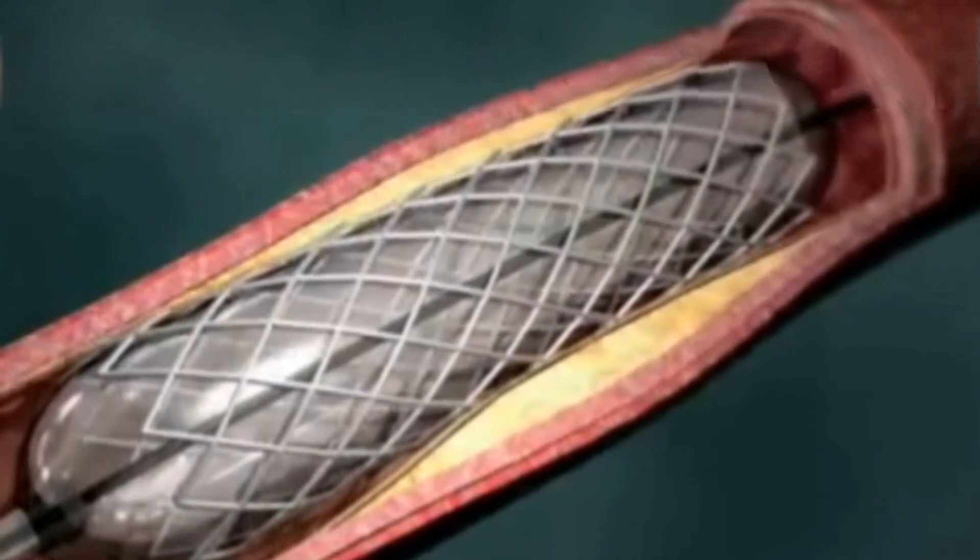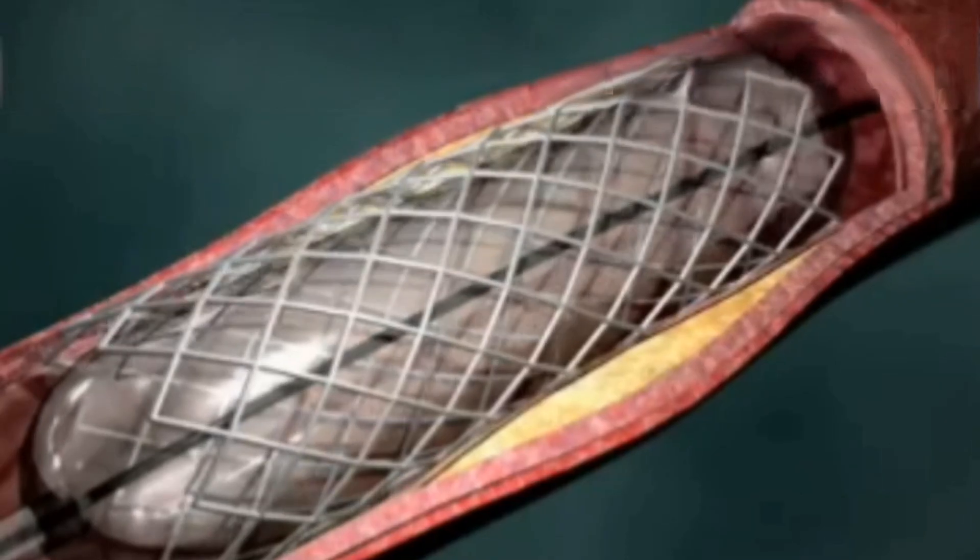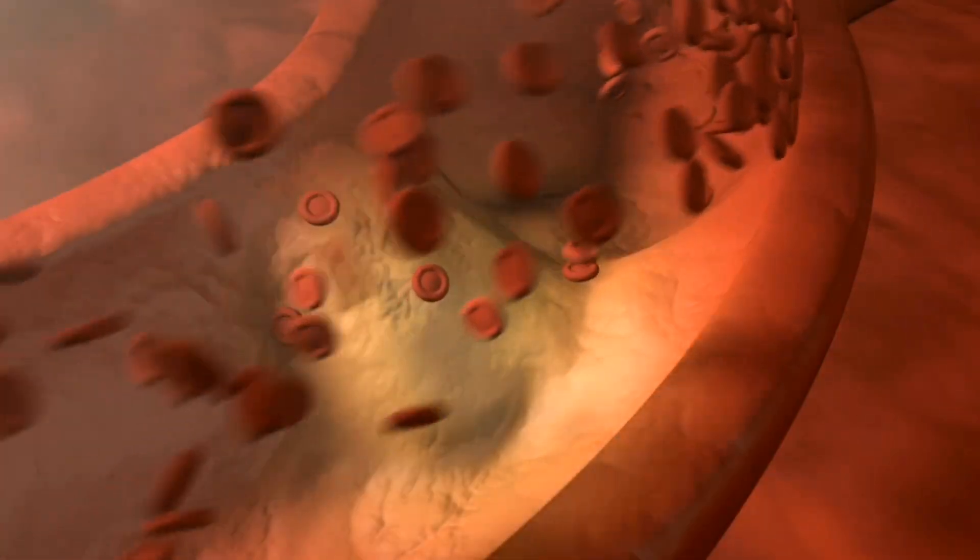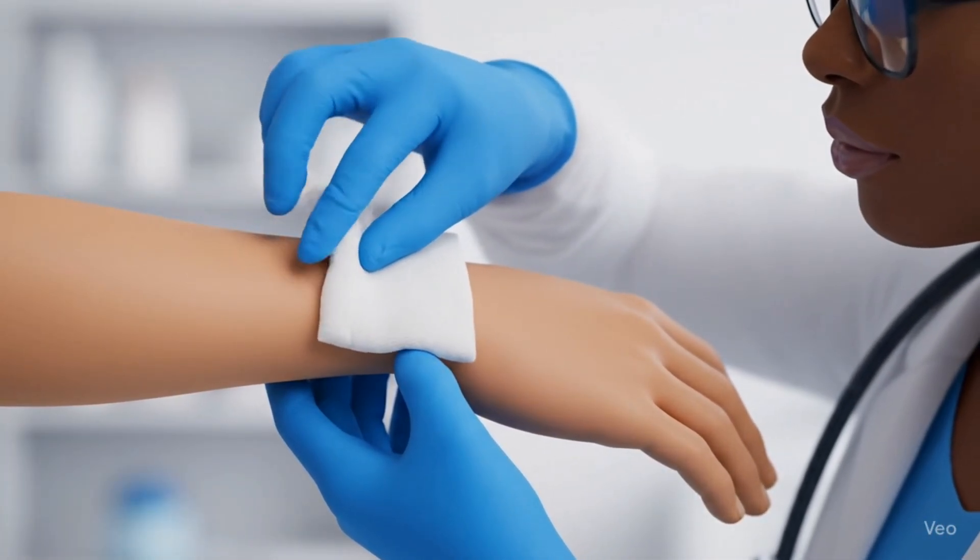After the balloon and catheter are withdrawn, the stent remains behind to hold the artery open permanently. The provider will look at more x-rays to see how much blood flow has improved after your procedure. A pressure bandage will be applied over the femoral artery to prevent bleeding.